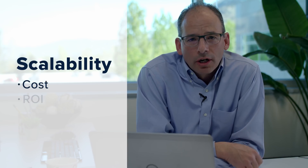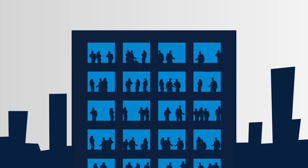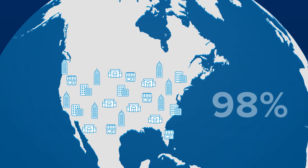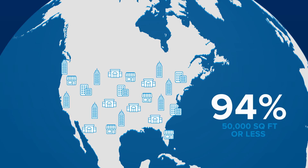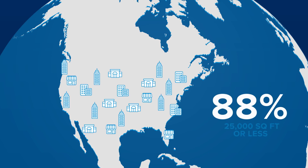I want to talk about the makeup of those 5.6 million commercial buildings. A lot of carriers will promote active DAS solutions, but the important key here is how scalable is a DAS system for cost, ROI, and ease of install. Active DAS is really intended for a large venue where hundreds, even thousands, of users need to be connected simultaneously. When you look deeper at those 5.6 million buildings in North America, 98% of all commercial buildings are 100,000 square feet or less. Going further, 94% are 50,000 square feet or less, and 88% are 25,000 square feet or less.